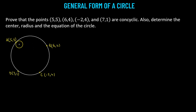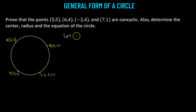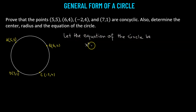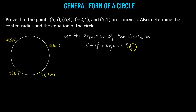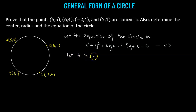We'll pick up three points first — points A, B, and C — and try to find the equation of the circle. We'll use the general form of the circle. Let the equation of the circle be x squared plus y squared plus 2gx plus 2fy plus c equals 0. We'll label this as equation number 1. We then consider points A, B, and C lying on the circle.